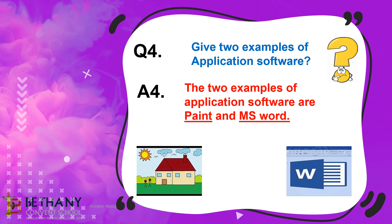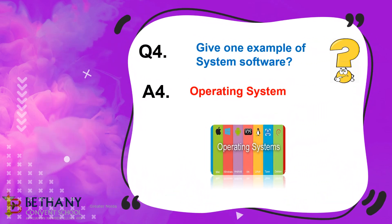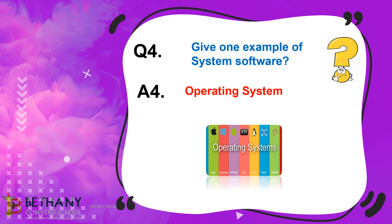Give two examples of application software. The two examples of application software are Paint and MS Word. You can take the example of other application software also. Give one example of system software. The answer is operating system.